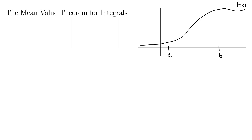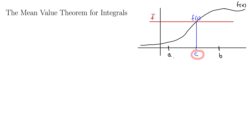Let's say that we had some function that was continuous on the interval a, b. We could then find the average value of that function by essentially averaging all the function values between a and b. We denote that average function by f-bar. What the mean value theorem tells us is that there must be some c between a and b such that f of c equals f-bar. So it just tells us whatever the average value of the function is, there must be some c down here between a and b such that we can evaluate the function at c and get that average value.